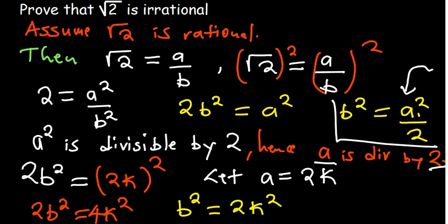Now we can divide both sides again by 2. So we realize that we're going to have B squared over 2 being equal to K squared. So at this point, since B squared is over 2, we can say B squared is divisible by 2.